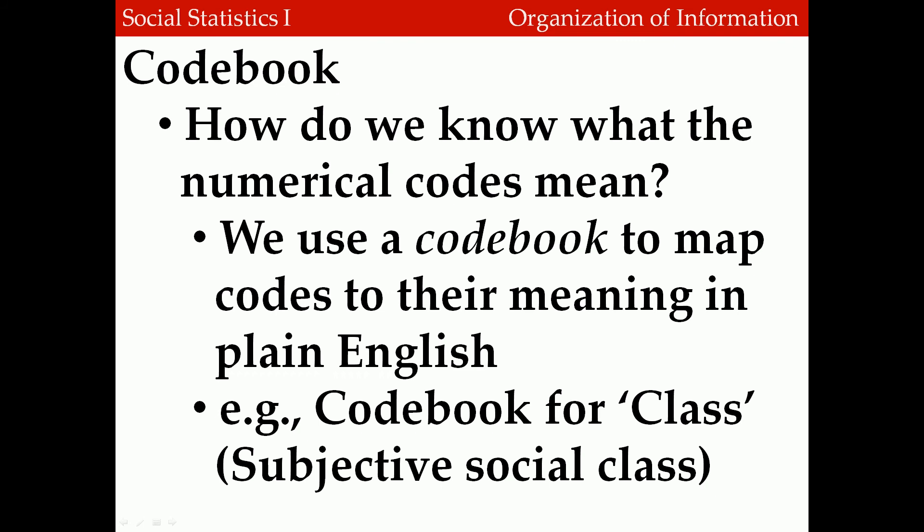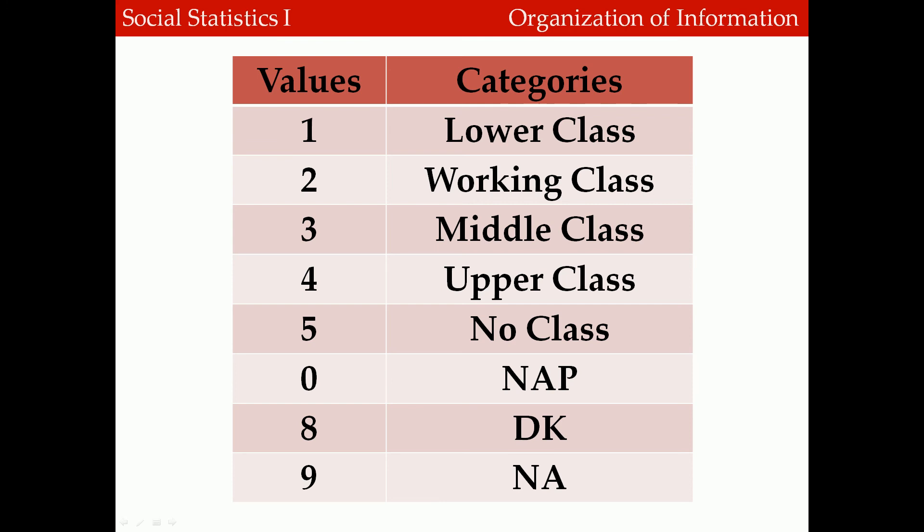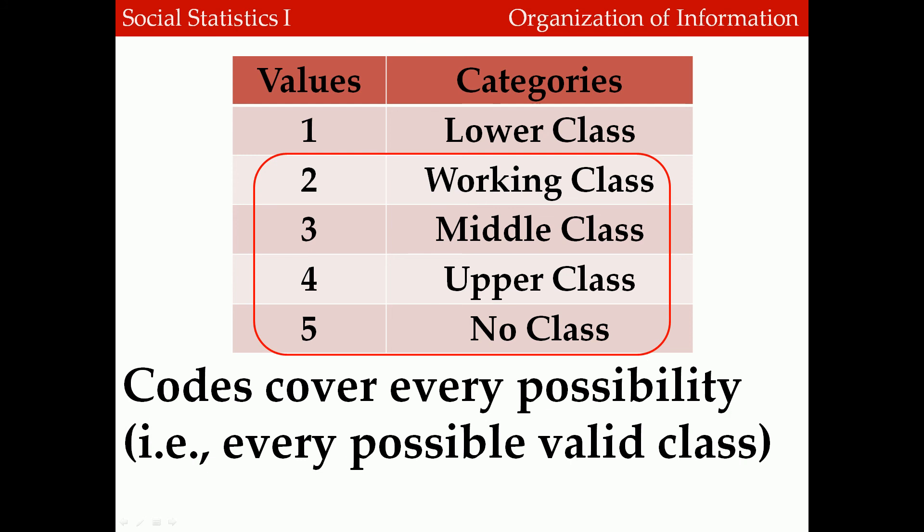That thing is called a codebook. A codebook is a mapping of the raw codes in the data set to their actual meaning in plain English. Let's look at the codebook entry for class, which measures the subjective social class of the respondent. Respondents were asked: 'If you were asked to use one of four names for your social class, which would you say you belong in? The lower class? The working class? The middle class? Or the upper class?' Each of these different classes was coded using a distinct numerical coding. For example, lower class people were coded using the value 1.